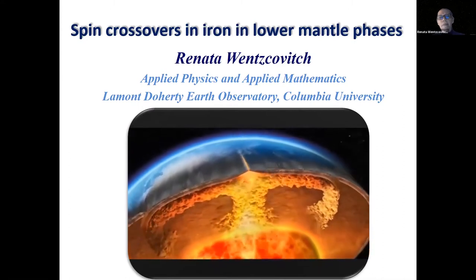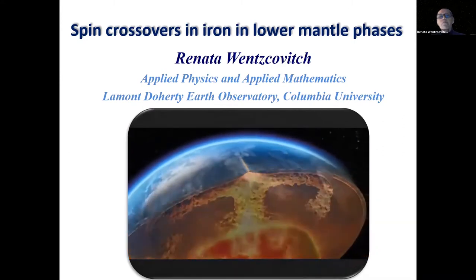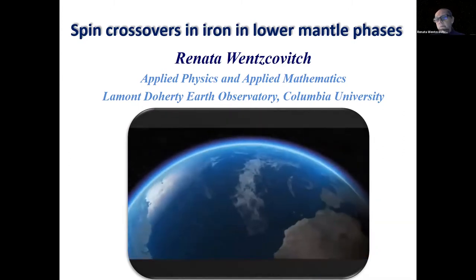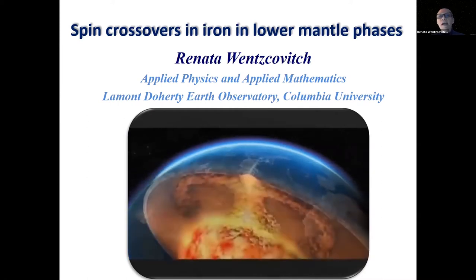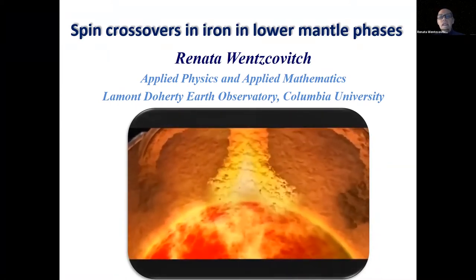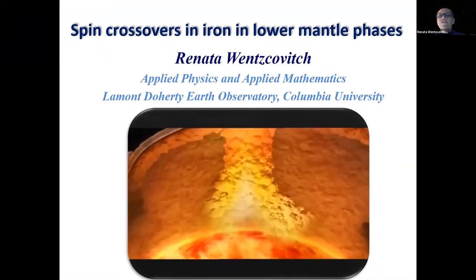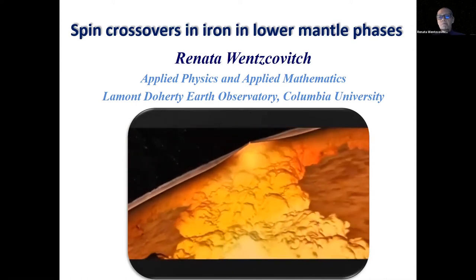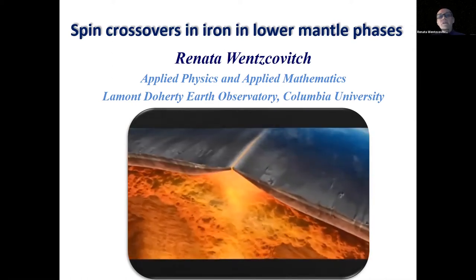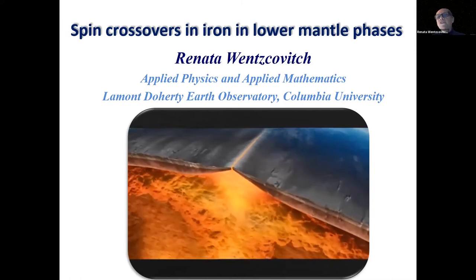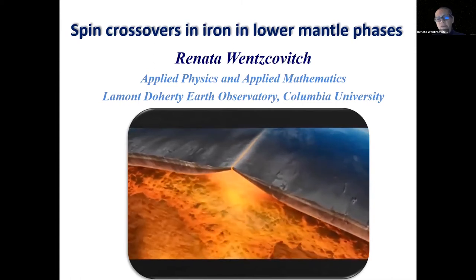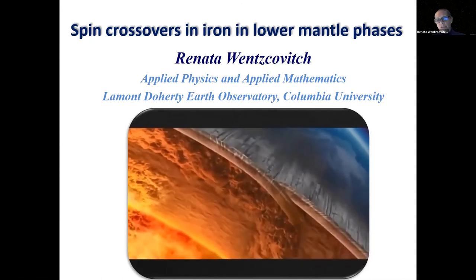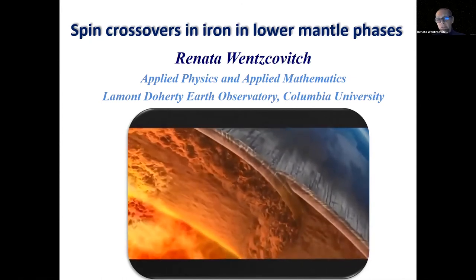But this convection process is very, very slow — it's subsolidus convection. And then near the surface, there is incongruent melting that spills magma through the surface, through these fissures at the surface, a boundary between plates that solidifies and produces the Earth's crust, the oceanic crust, which has different chemical composition than the Earth's interior.